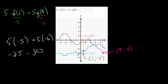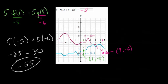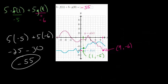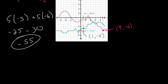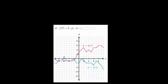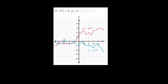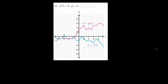Plugging those in we get 5 times minus 5 plus 5 times minus 6, which is negative 25 minus 30, or negative 55. So the answer we'd put in the box is minus 55.